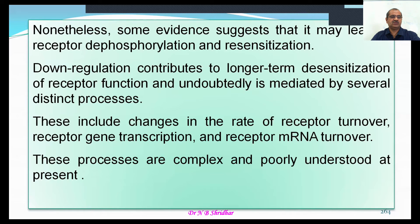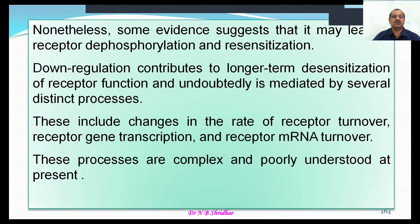Overall, the structure-activity relationship involves G-proteins — G-inhibitory, G-stimulatory, Gq, and other proteins — each having different structures. The neurotransmitters norepinephrine and epinephrine have a unique structure, but they will bind with varied receptor structures and elicit different types of activity.